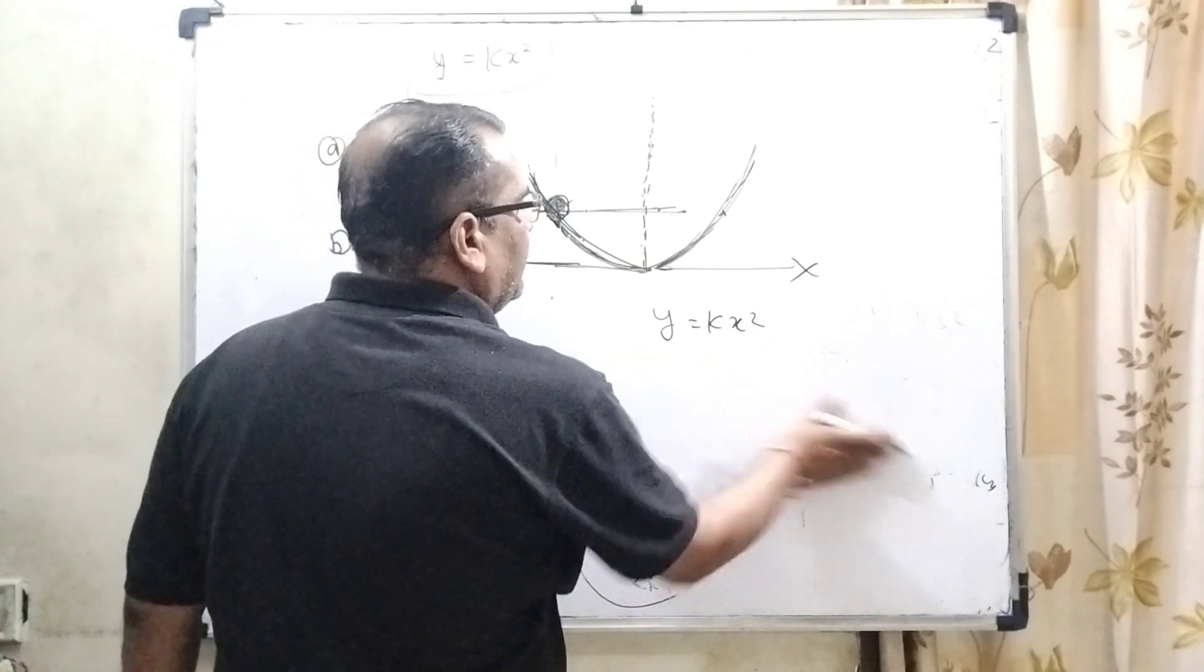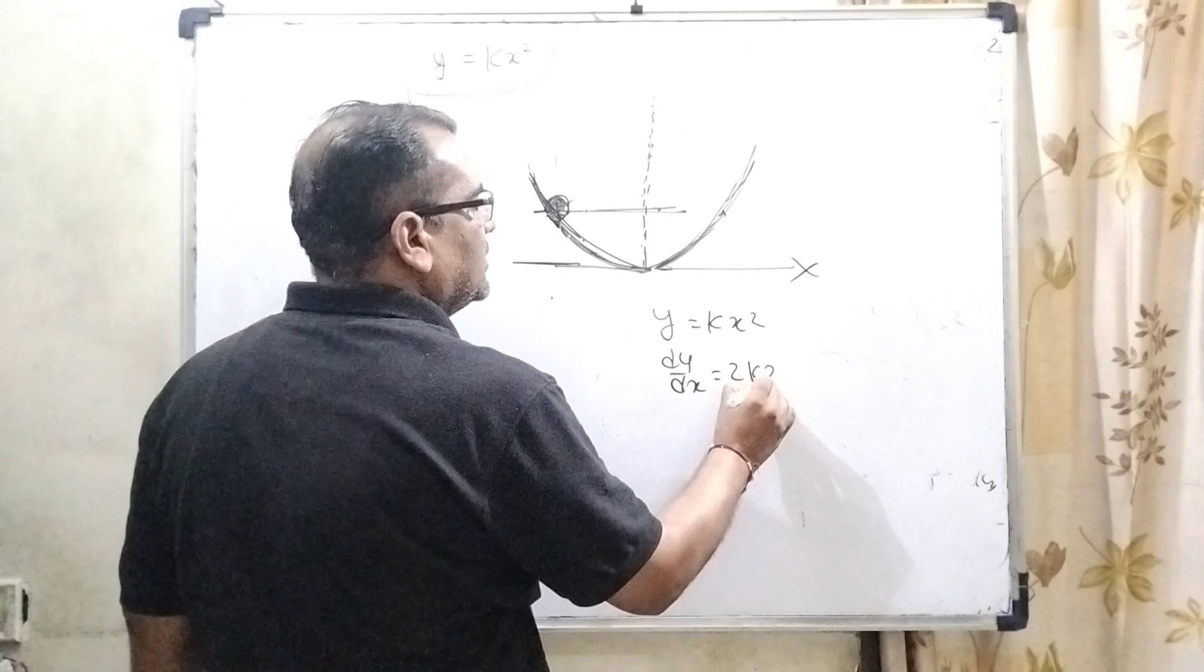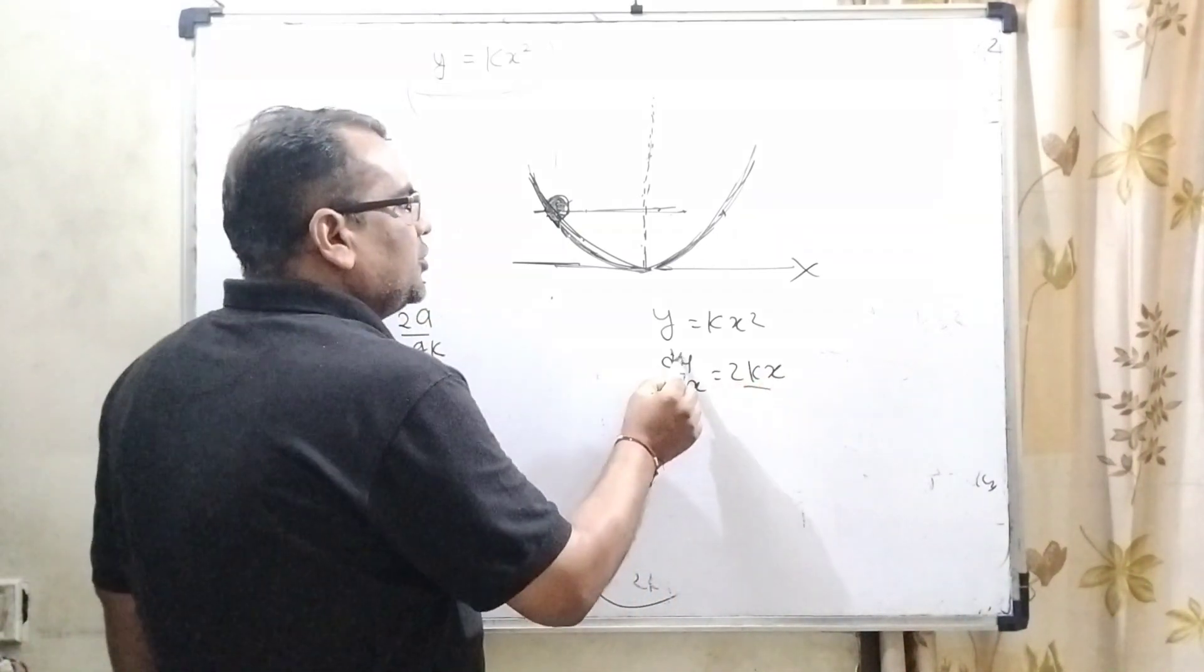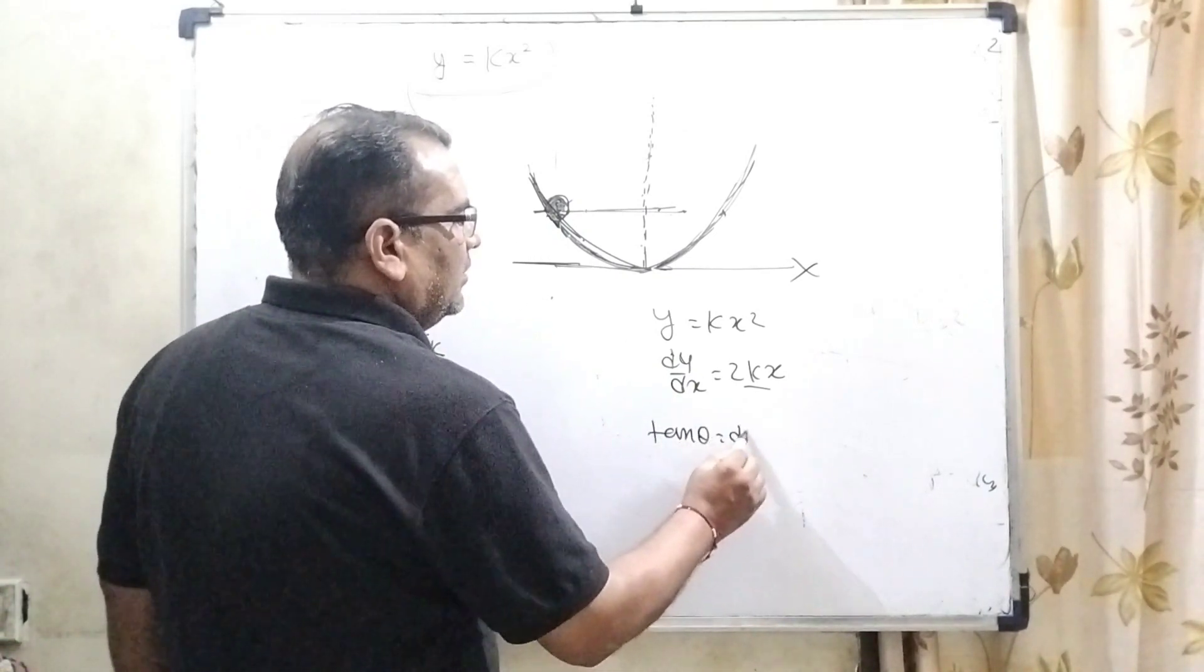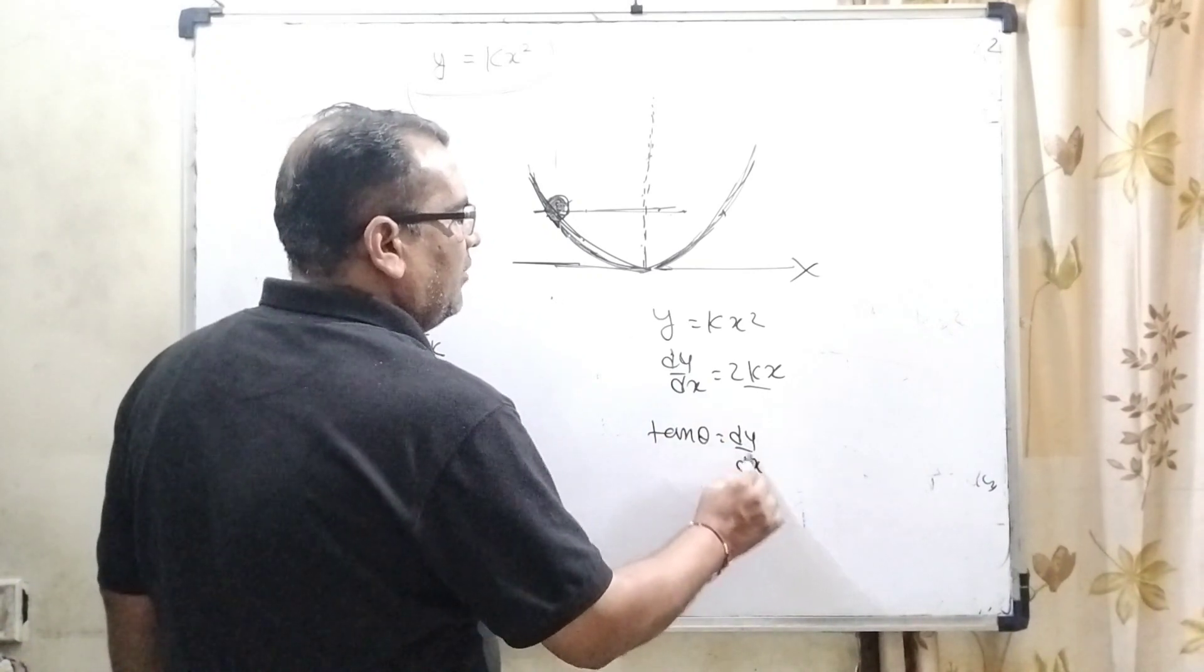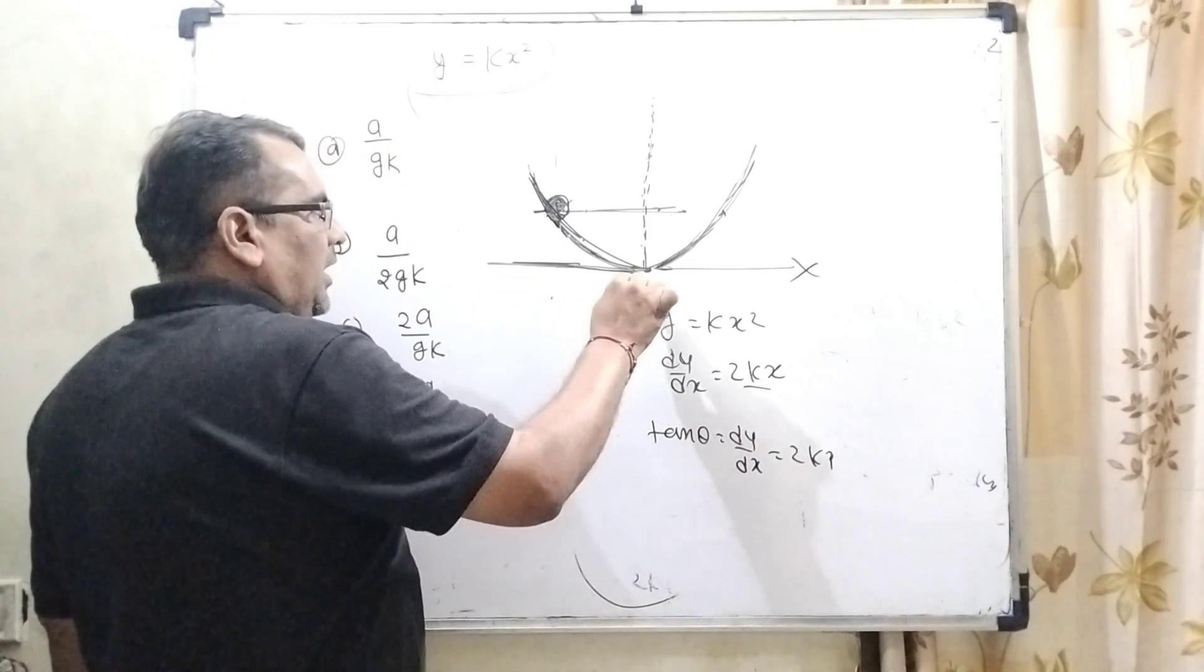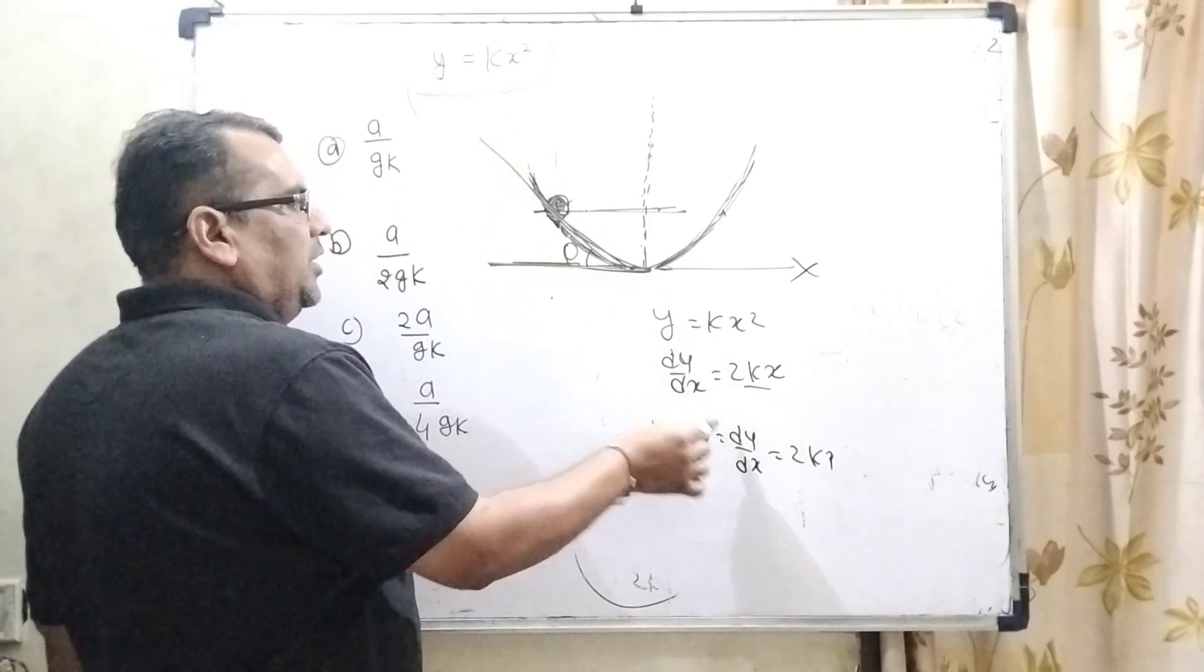Then differentiate with respect to x: dy by dx equals 2kx. So here dy by dx means slope, or we can say that gradient tan theta. An angle is formed between y and x-axis. So therefore dy by dx equals 2kx. It means the angle is formed between the horizontal line and this is theta dy by dx.